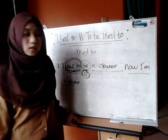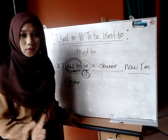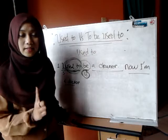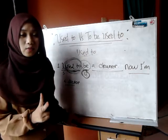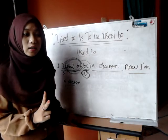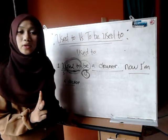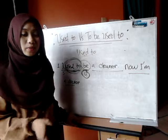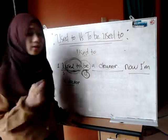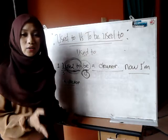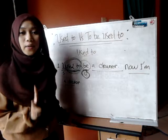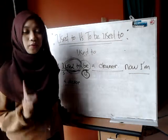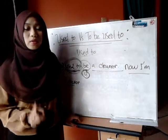So the points here: 'used to' — first, it is only for the past time, past situation, past statement. Second, it explains a regular past action that is different from now — there's a change between the past time and the present time. Third, 'used to' only wants to meet with verb one or infinitive when put in a sentence.